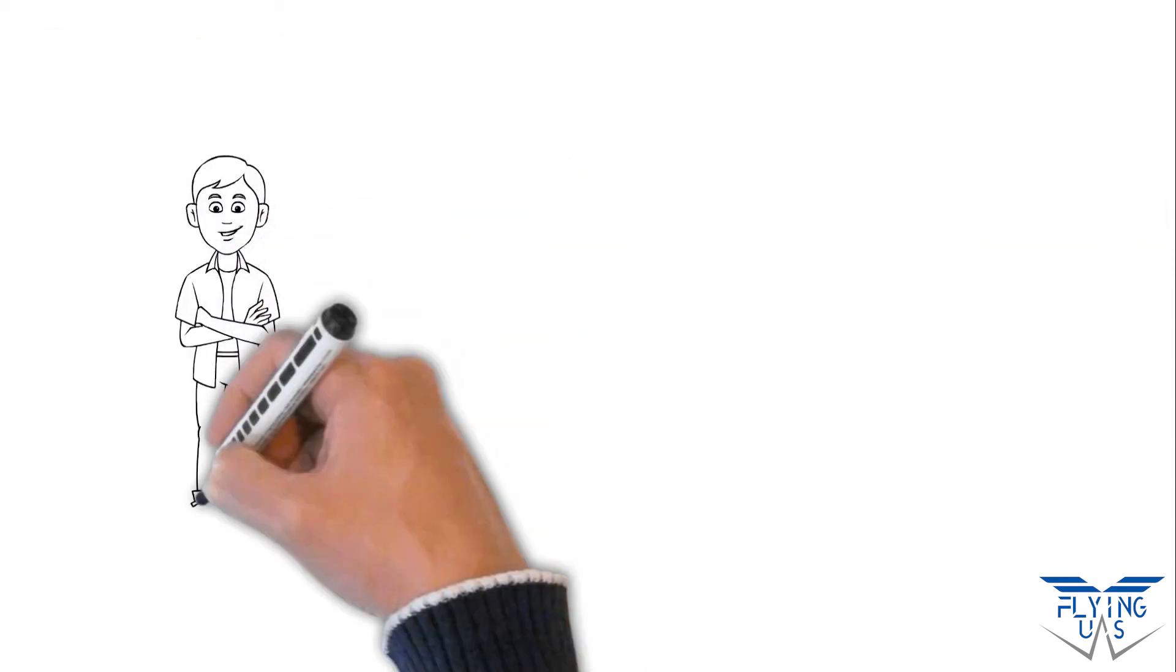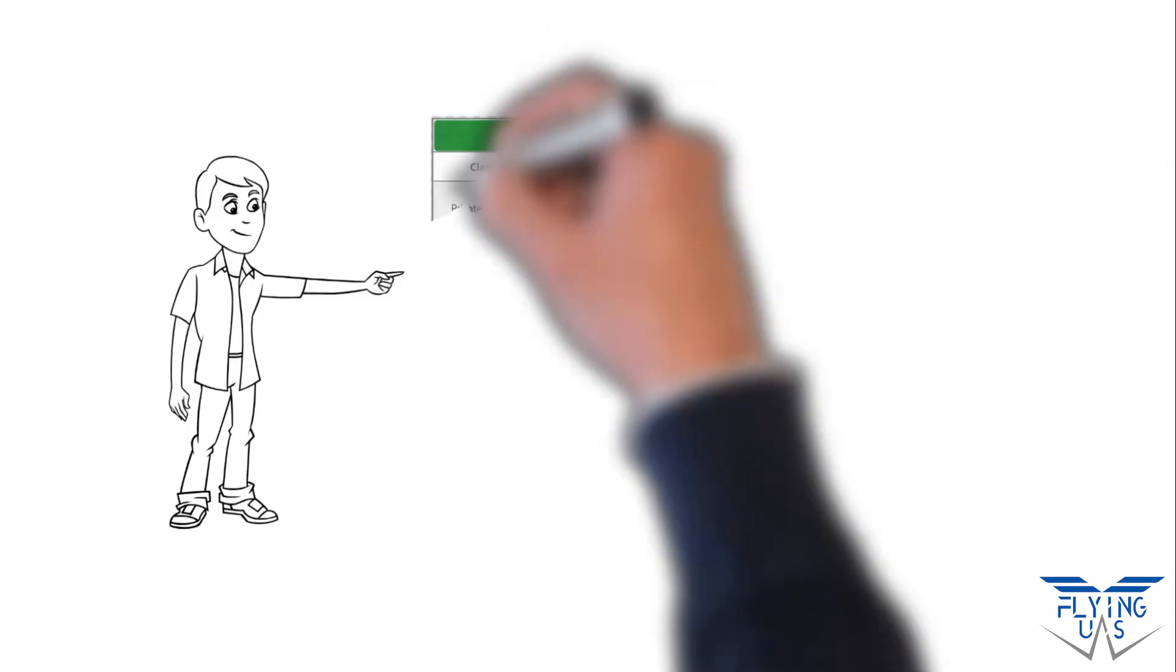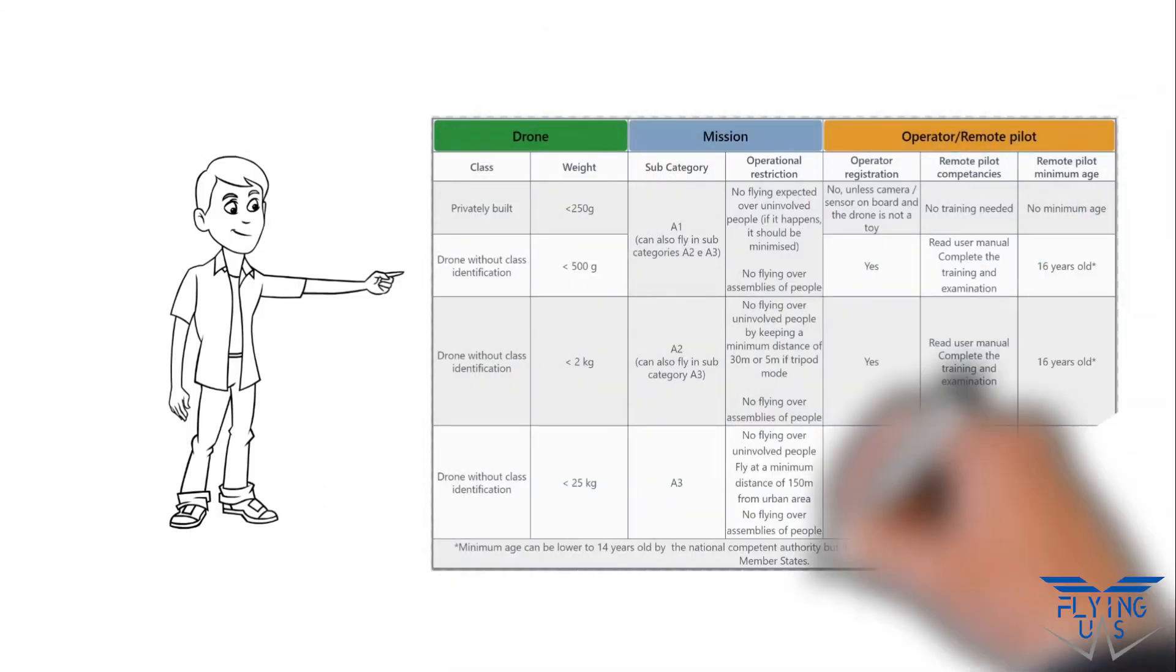It all seems very simple. The problem is that only from 2022 it is expected that the drone classifications C0 to C4 will be put into force by the manufacturers. Therefore, the use of the subcategories from 1st of January 2021 are linked to the weight of the drone as per the table.